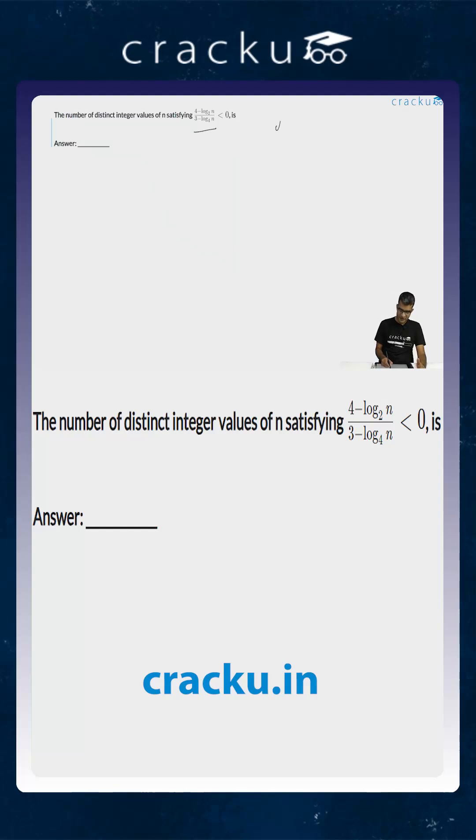Let us assume that the value of log of n to the base 4 is equal to p. What is log of n to the base 4? This is equal to log of n to the base 2 squared, which is equal to half of log of n to the base 2.